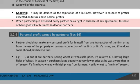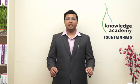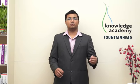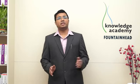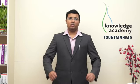When partnership is dissolved, every partner has right — in absence of any agreement — to share or have goodwill of the business sold for all partners. If there is an agreement, then precise sharing will be there; say for example, agreement says 3:2:1, then sharing will be 3:2:1. If there is no agreement, then it will be in equal proportion.